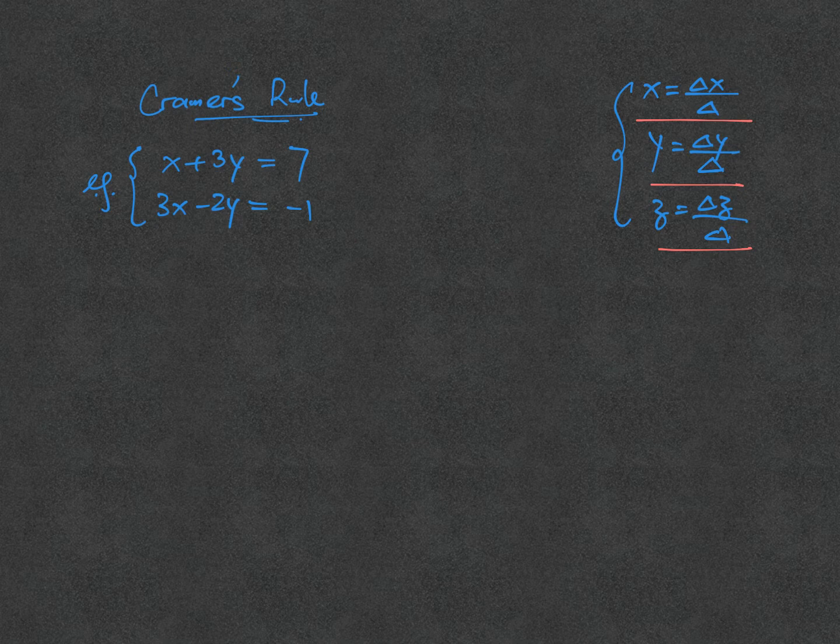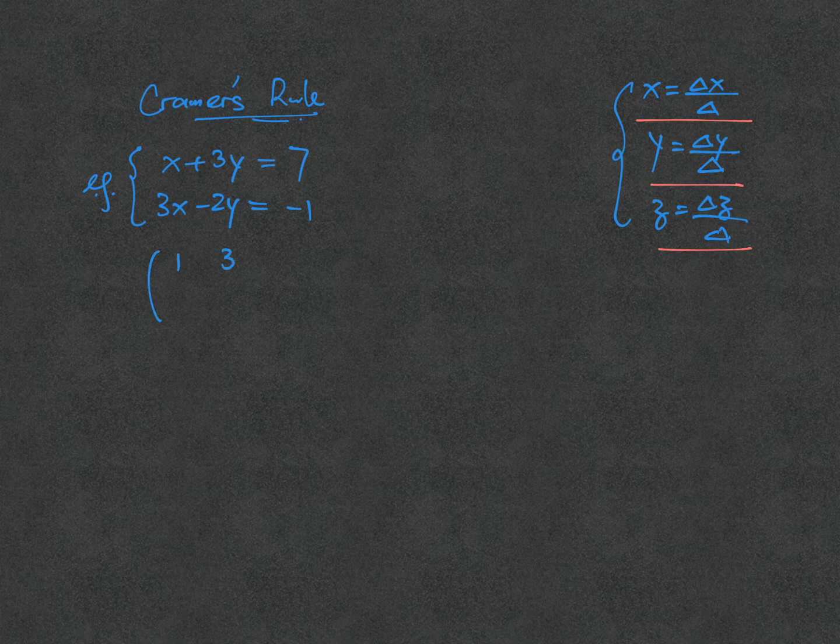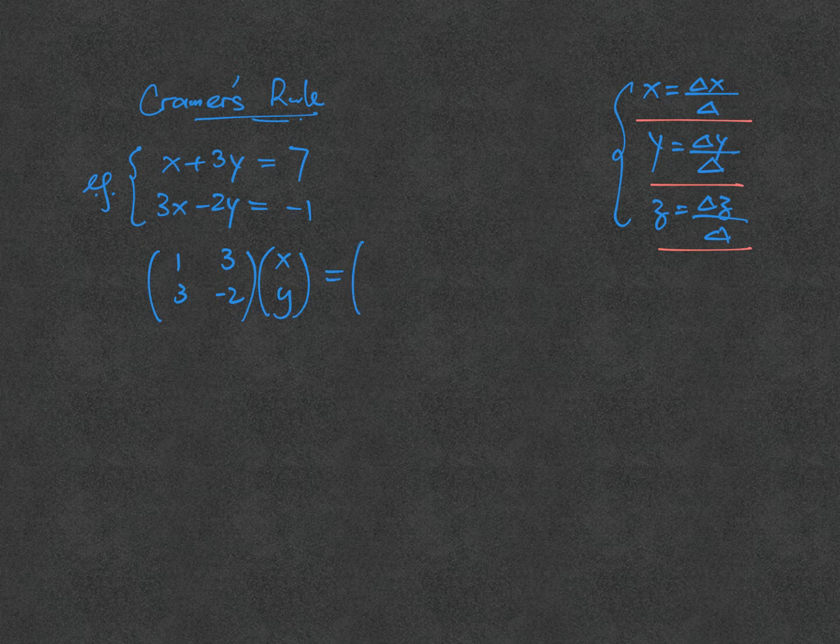In matrix form, this is presented as 1, 3, 3, minus 2, multiplied by a column matrix x, y, equal to the numbers on the right-hand side, 7, minus 1. This is the matrix presentation.